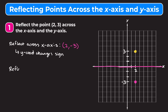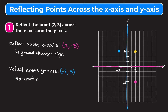Now we're going to reflect the yellow point across the y-axis. The y-axis is right here, so we're going to mirror it horizontally. If we do that, our point is going to end up right here. Adding tick marks, this is going to be at an x-coordinate of negative 2, so the coordinates of that blue point are (−2, 3). When you reflect a point across the y-axis, the x-coordinate changes signs.